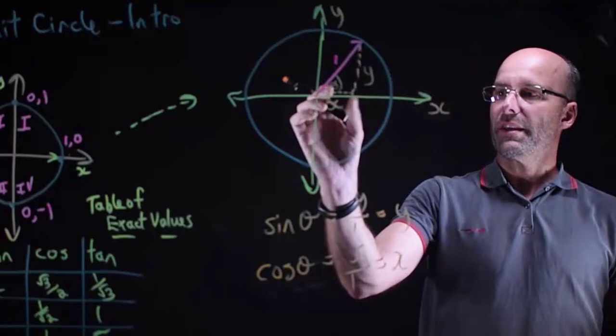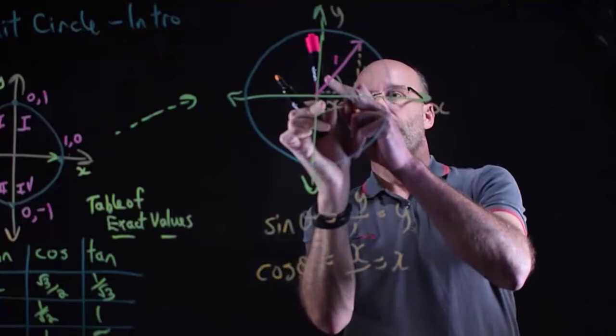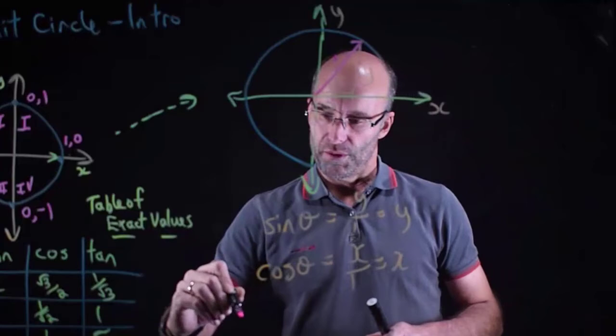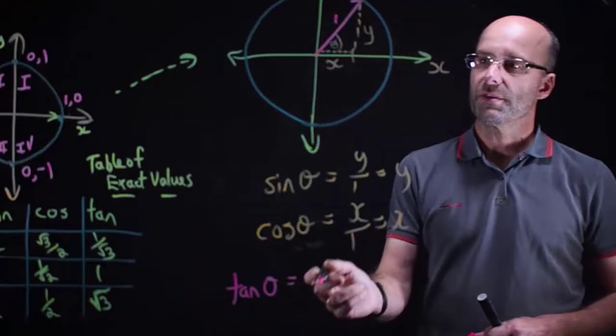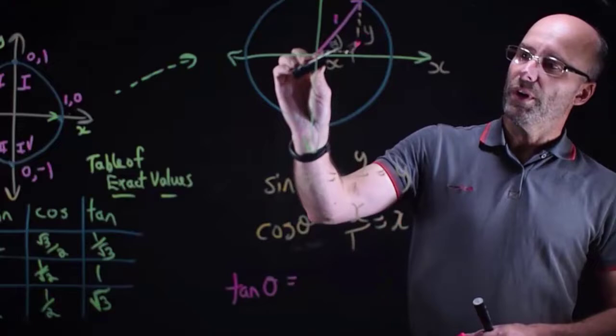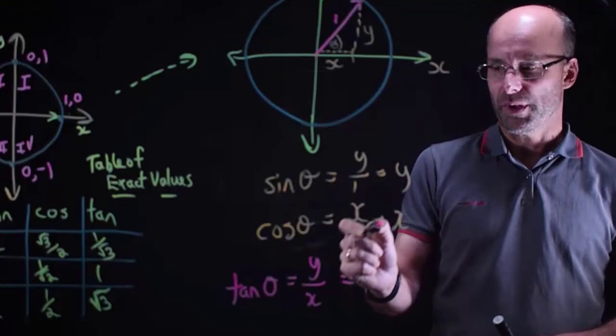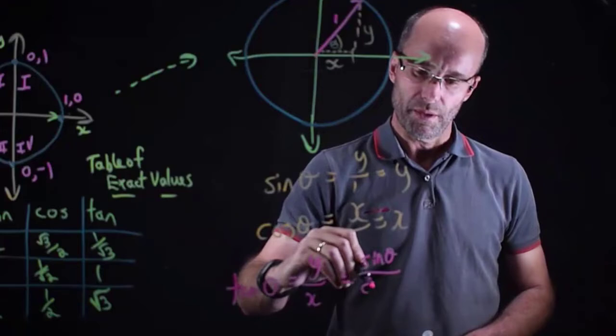Cosine is adjacent over hypotenuse, which is x / 1 = x. So cosine θ is the x-component. As the radius arm moves around, the x-value grows and shrinks accordingly. Tan is opposite over adjacent, which is y / x. Interestingly, since sine θ = y and cosine θ = x, we can also write tan θ = sine θ / cosine θ — a very useful result.